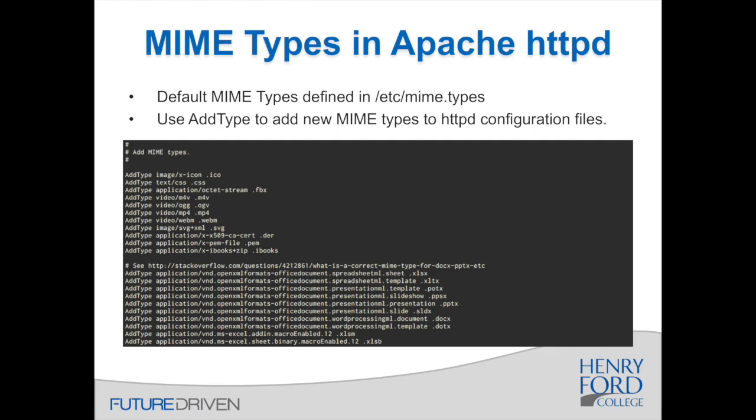The example screenshot here is not really just an example — this is an actual snippet of the Henry Ford College main website configuration file. This is a common setting that I use on all of our websites that run off of that server, and these are all the file types that I've had to add; otherwise, when the web server serves these files, browsers will sometimes download those incorrectly. You'll notice that the Microsoft Office files are pretty messy and pretty gross.